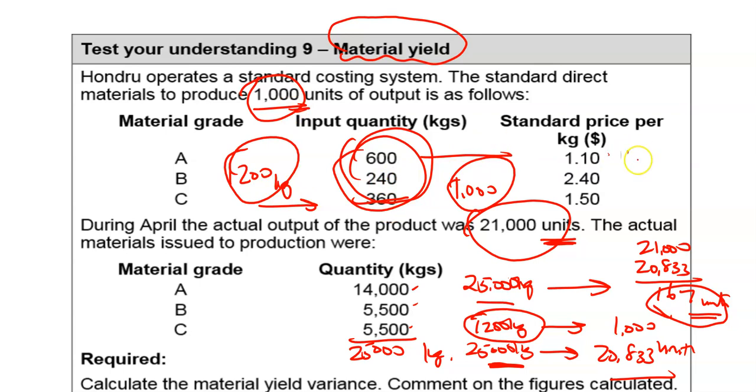A thousand units, I need 1200 kilograms, and I'm just going to multiply this out. I'm just going to use, let me see if I can get a new sheet. So I have 600 times one pound ten, I have 240 times two pound 40, and I have 360 times one pound 50.